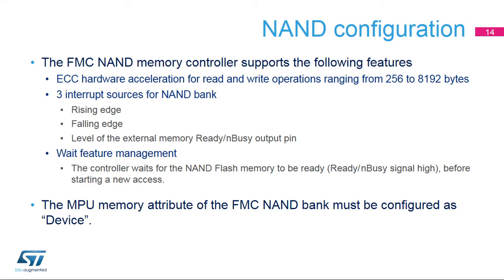The FMC NAND memory controller includes support for the following features. Error correction code: the ECC algorithm can perform 1-bit error correction and 2-bit error detection per 256 to 8,192 bytes read or written from or to the NAND Flash memory. It is based on the Hamming coding algorithm. Three interrupt sources can be enabled to detect a rising edge, falling edge, or level on the ready/busy signal output from NAND Flash memory. The MPU memory attribute of the FMC NAND bank must be configured as a device.